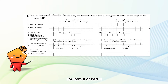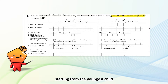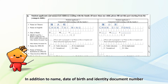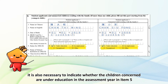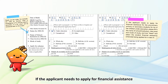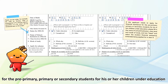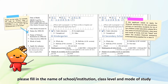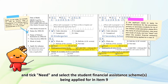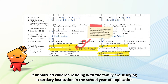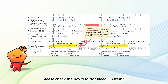For Item B of Part 2, the applicant is required to provide particulars of student applicants and unmarried children residing with the family, starting from the youngest child. In addition to name, date of birth, and identity document number, it is also necessary to indicate whether the children concerned are under education in the assessment year in Item 5. If the applicant needs to apply for financial assistance for pre-primary, primary, or secondary students, please fill in the name of school, institution, class level, and mode of study, and tick Need, and select the student financial assistance schemes being applied for in Item 9. If unmarried children residing with the family are studying at a tertiary institution in the school year of application, please check the box Do Not Need in Item 9.